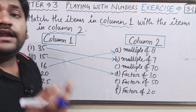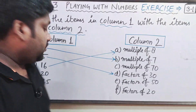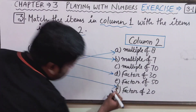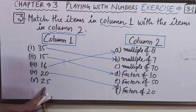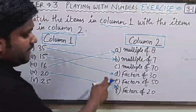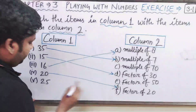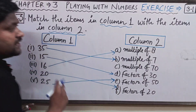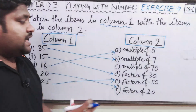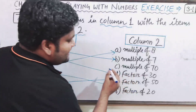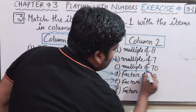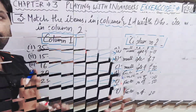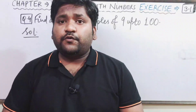Now 25 — is it a factor of 50? Yes, 25 is a factor of 50 — match it. One option is left over, so let it be. There is no problem. Let us move to Question 4.